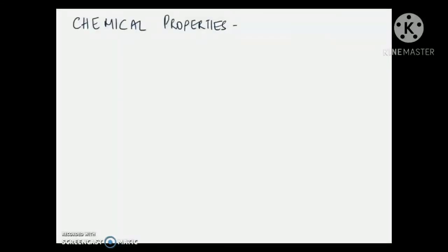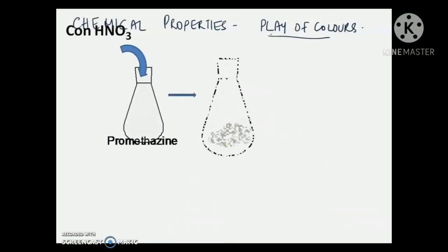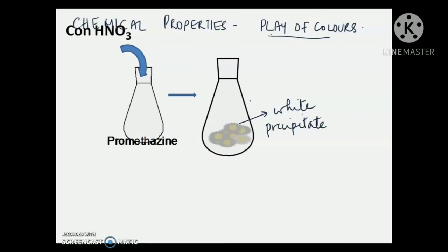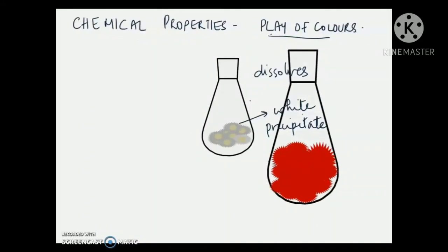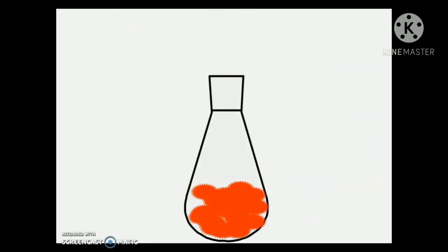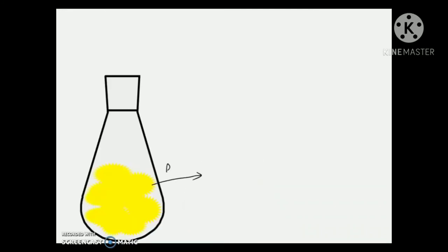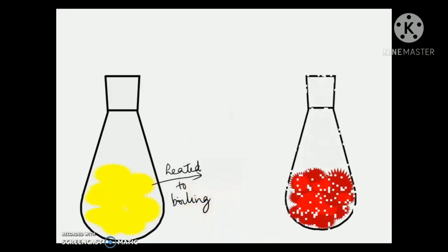Coming to the chemical properties of Promethazine hydrochloride: it undergoes a very interesting characteristic reaction called the 'play of colors.' When nitric acid is added to an aqueous solution of Promethazine hydrochloride, first a white precipitate of Promethazine nitrate is formed, which rapidly dissolves to form a red solution. The color then changes to orange and finally to a bright yellow. If the solution is then heated to boiling, the color again becomes orange and finally an orange-red precipitate is produced.